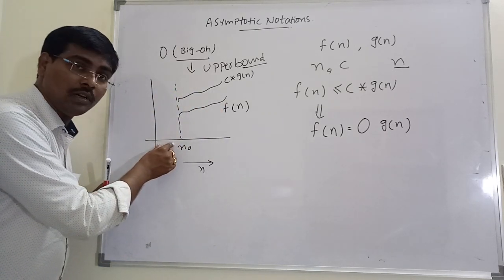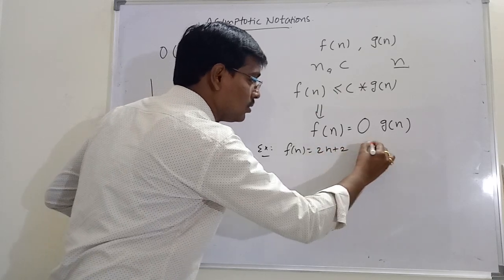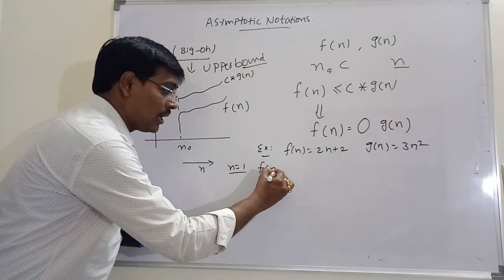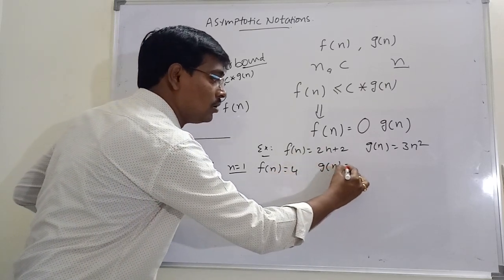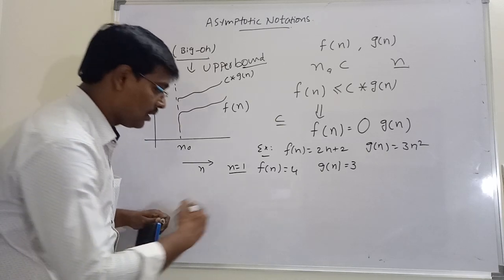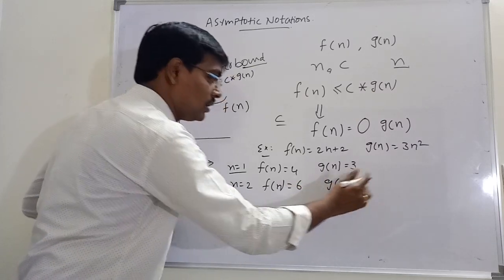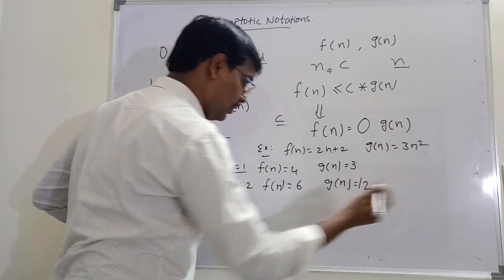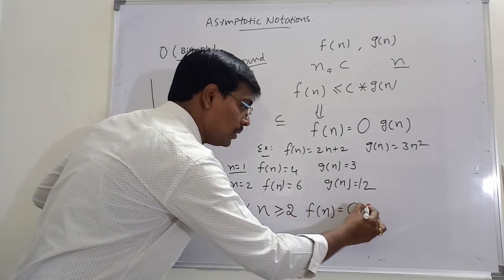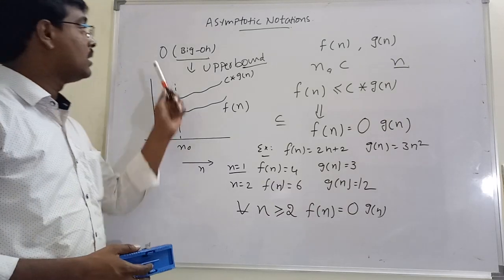Before n0 there is no need to satisfy this condition. For example, f(n) = 2n + 2 and g(n) = 3n squared. For n = 1, f(n) = 4 and g(n) = 3. Assume constant c = 1. For n = 2, f(n) = 6 and g(2) = 3 × 4 = 12. That means for all n greater than or equal to 2, f(n) is Big O of g(n). By using Big O notation we identify the upper bound of the algorithm.